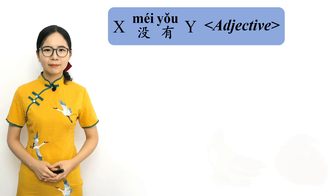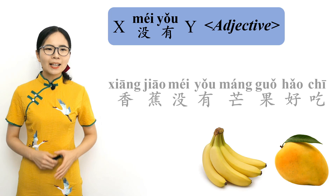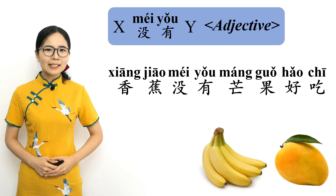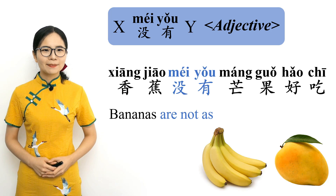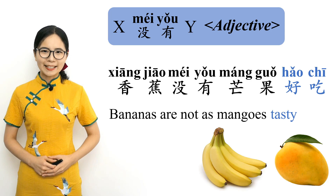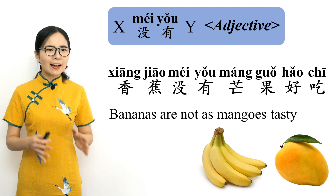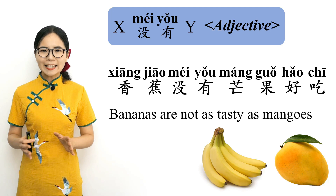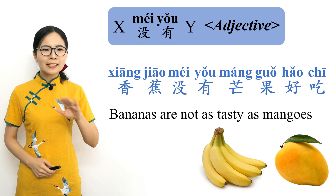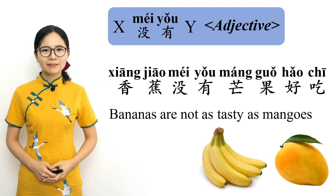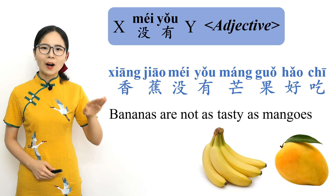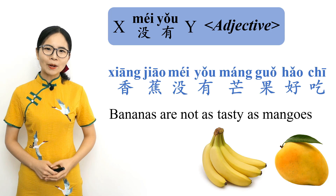Bananas are not as tasty as mangoes: 香蕉没有芒果好吃. 香蕉 means 'bananas,' 没有 means 'are not as,' 芒果 means 'mangoes,' and 好吃 is an adjective meaning 'tasty' or 'delicious.' Bananas are not as tasty as mangoes. Please repeat after me. 香蕉没有芒果好吃. Bananas are not as tasty as mangoes.